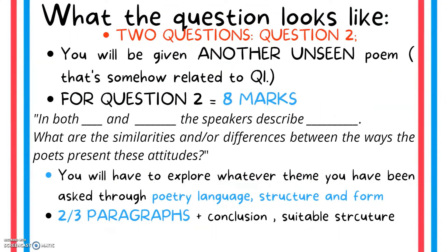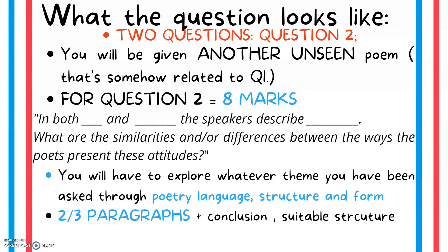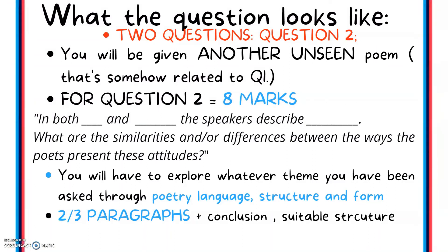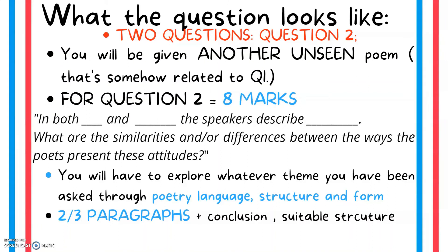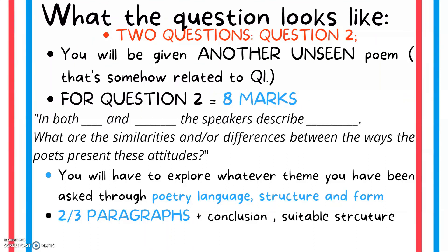For Question 2, you'll be given another unseen poem which is somehow related — the same topic as the first poem, but from a different era. You'll be asked: in both Poem 1 and Poem 2, the speakers describe whatever the related theme is. What are the similarities and/or differences between the ways the poets present these attitudes? This is only eight marks, but it's a comparison between unseen poetry. You'll have to explore whatever theme you've been asked through poetry language, structure, and form. Two to three paragraphs and a conclusion — which is not always necessary — would be a suitable structure. There are going to be loads of videos coming up talking about how to compare unseen poetry, but today we're just looking at the structure of the question.